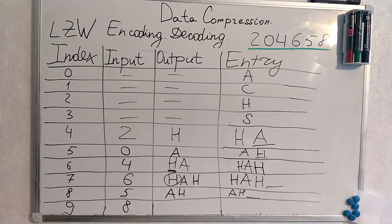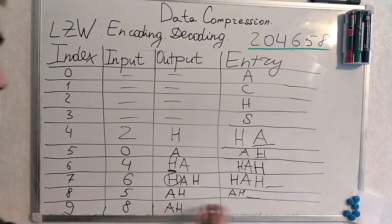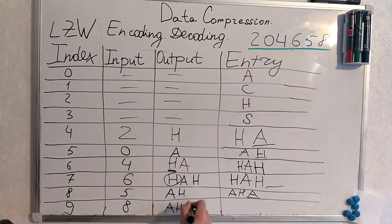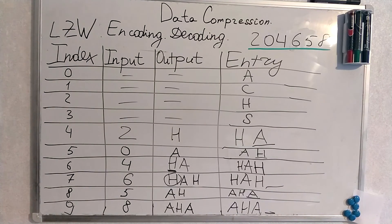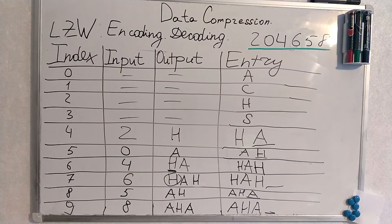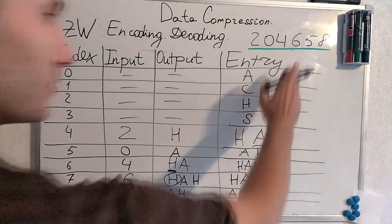Then 8 — once again, 8 is referring to itself. But the entry is AH-something, thus it becomes AHA. Output is AHA and new entry is AH-something. We will not actually even generate this new entry because our code stream is over. Thus our algorithm made it possible to decode what's hidden. And what's actually hidden, referring to entry 2, is H.